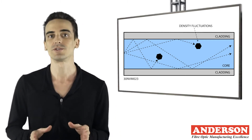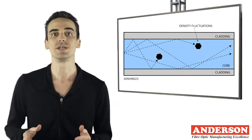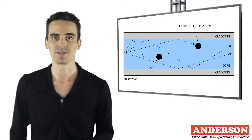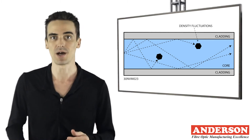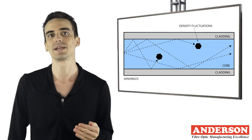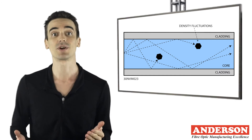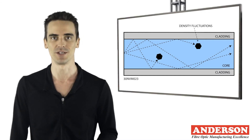Intrinsic absorption is very low compared to other forms of loss. The main cause of intrinsic absorption in the infrared region is the characteristic vibration frequency of atomic bonds in silica glass — specifically the vibration of silicon-oxygen bonds. The interaction between the vibrating bond and the electromagnetic field of the optical signal causes intrinsic absorption, as light energy is transferred from the electromagnetic field to the bond, causing attenuation.